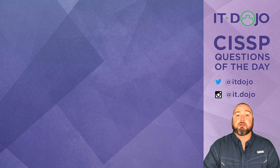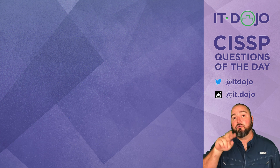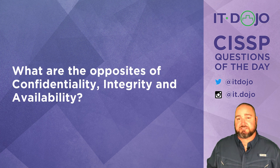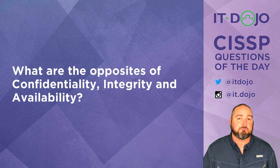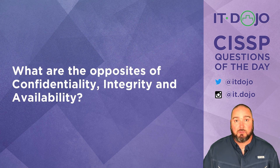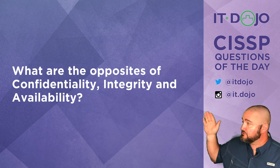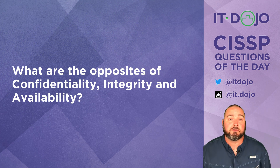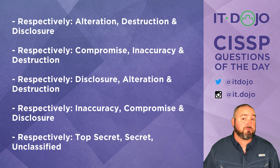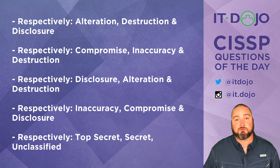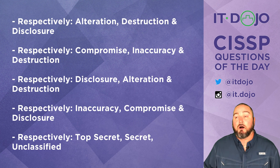Here comes question number two: what are the opposites of confidentiality, integrity, and availability? Look at the answer choices respective to each one, think about it, click pause if you need to, and when you're ready click play and we can talk it through.